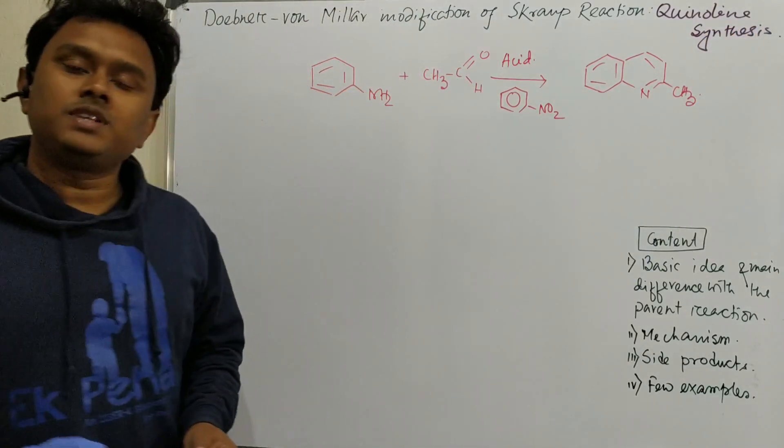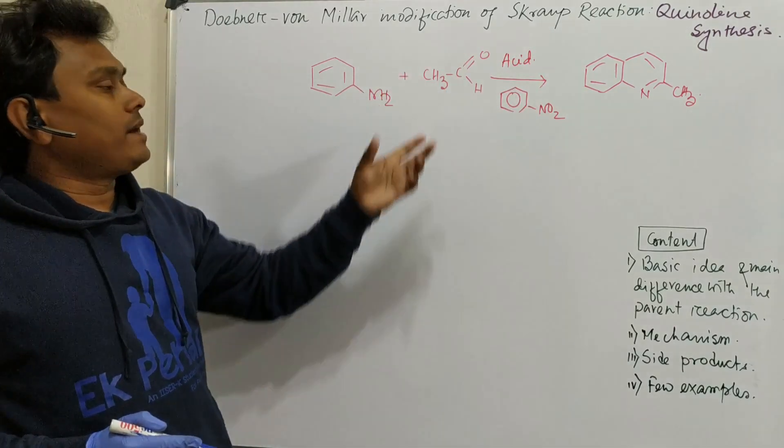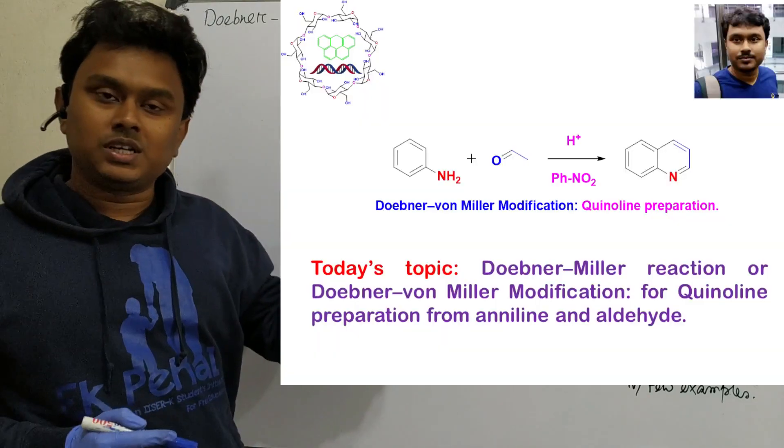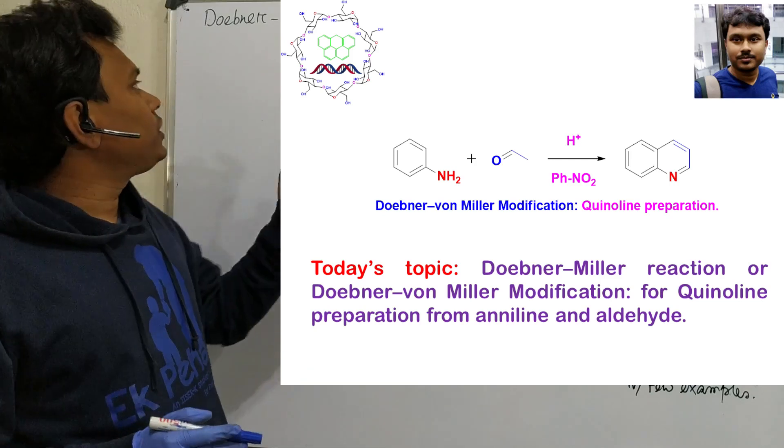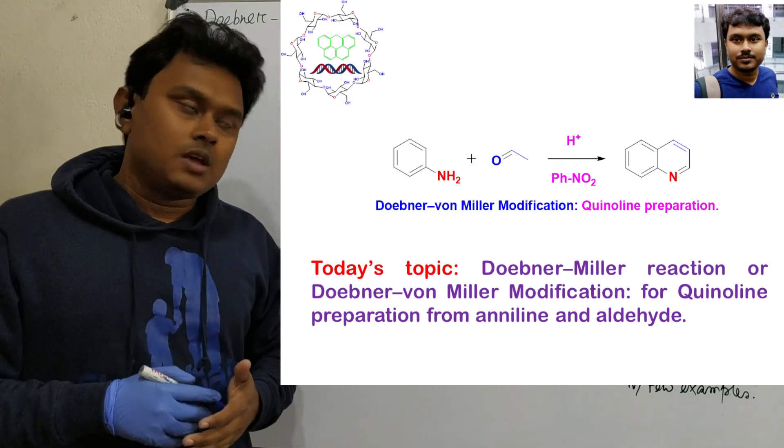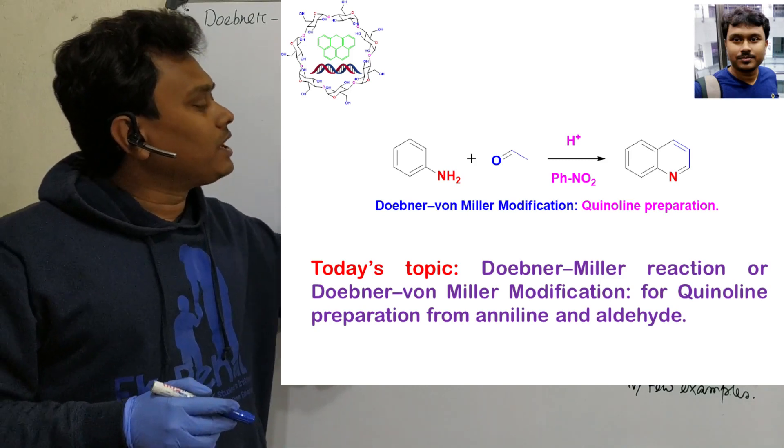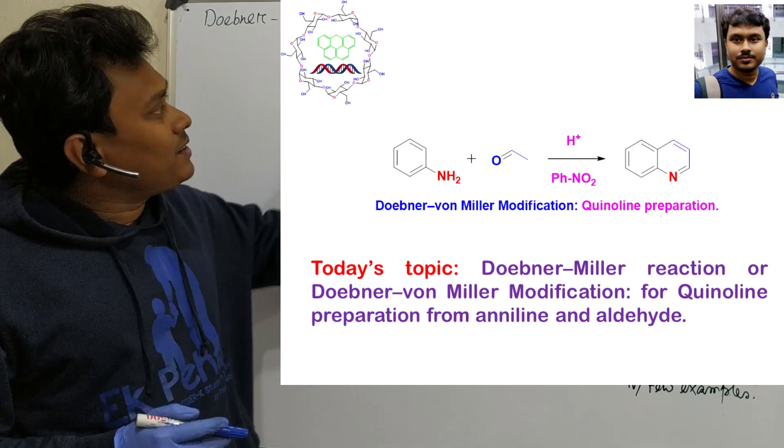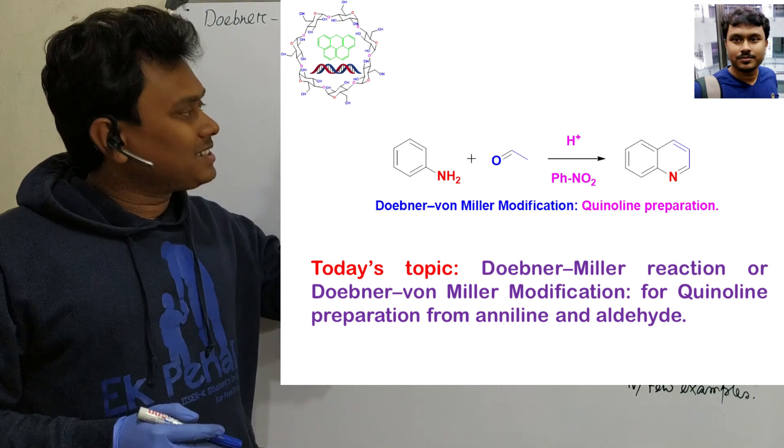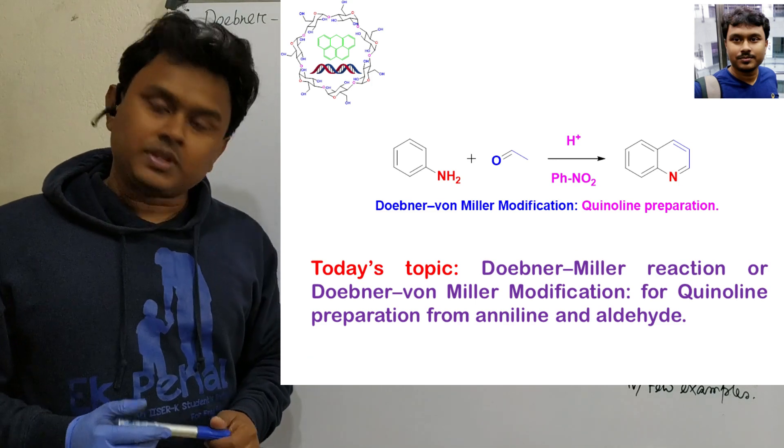Previously we have discussed about Skraup reaction. And today we will discuss its modification by two scientists, Doebner and Von Miller. In combination this modification is called Doebner Von Miller modification. So today's topic we will discuss few points like basic idea and mechanism of the reaction and difference with the parent, which is the Skraup reaction. Secondly we will discuss about the mechanism and the side products of this process also and finally at the end few examples.